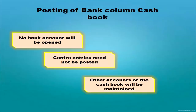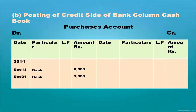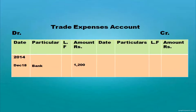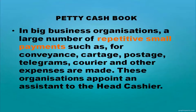For posting the bank column cash book: no bank account will be opened in the ledger. Contra entries need not be posted. For the debit side: sales account — post 'By Cash' on the credit side with date and amount. For the credit side: purchases account — post 'To Bank' on the debit side; wages account debit to cash; trade expenses debit to bank; salary debit to cash; rent debit to cash — all posted on the debit side of their respective accounts.